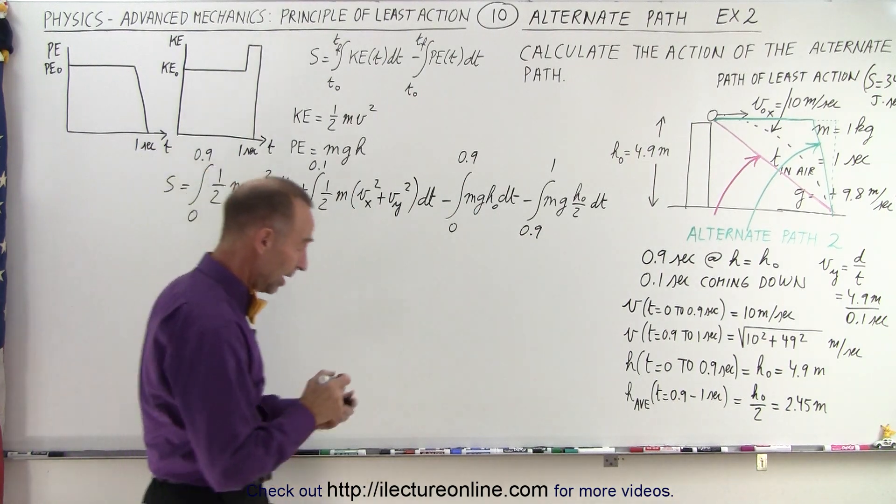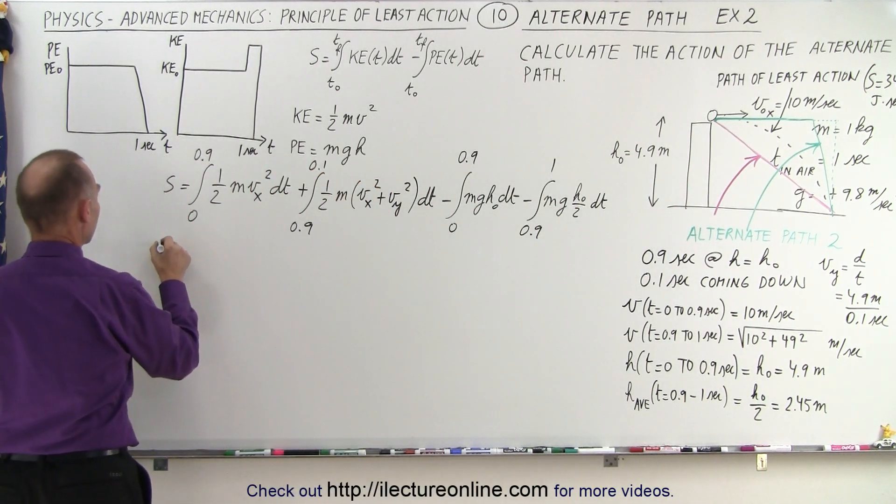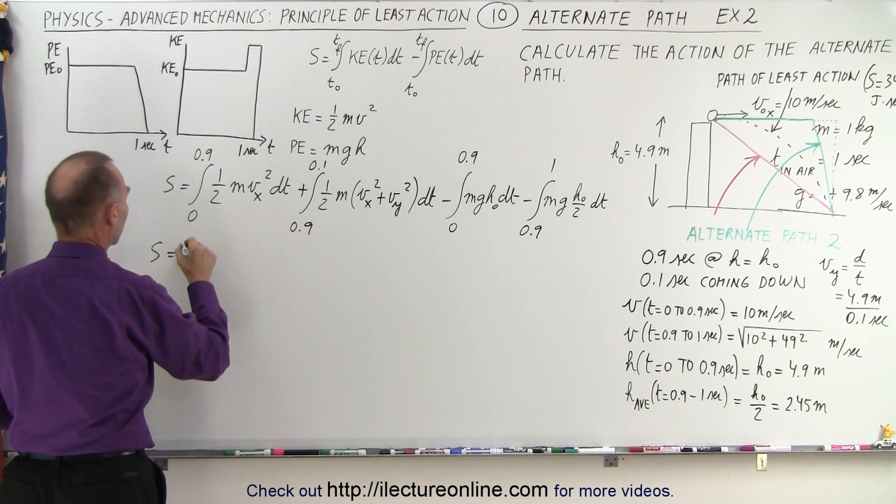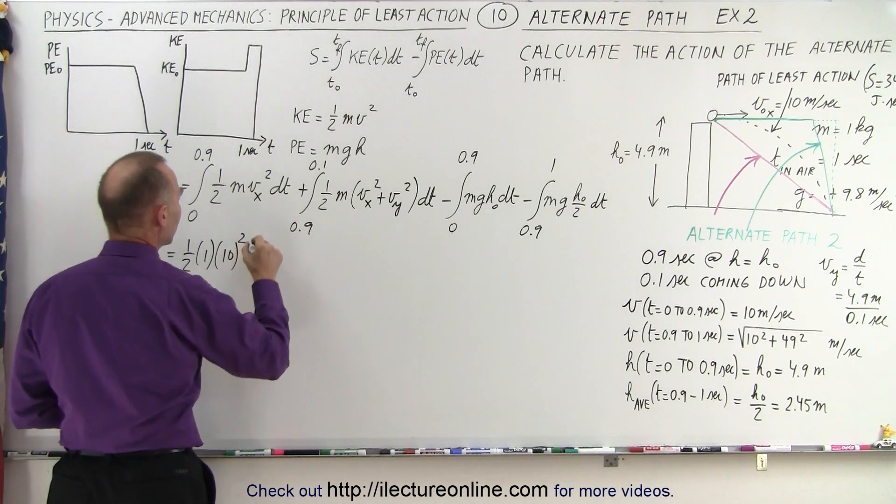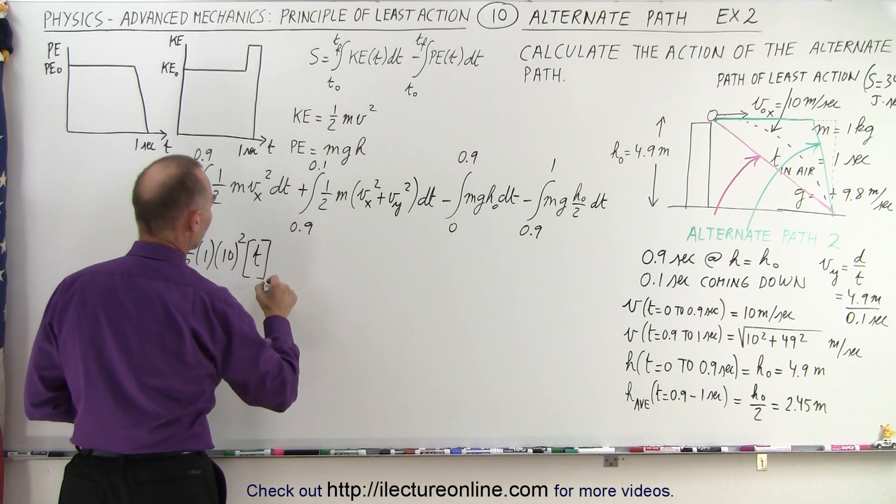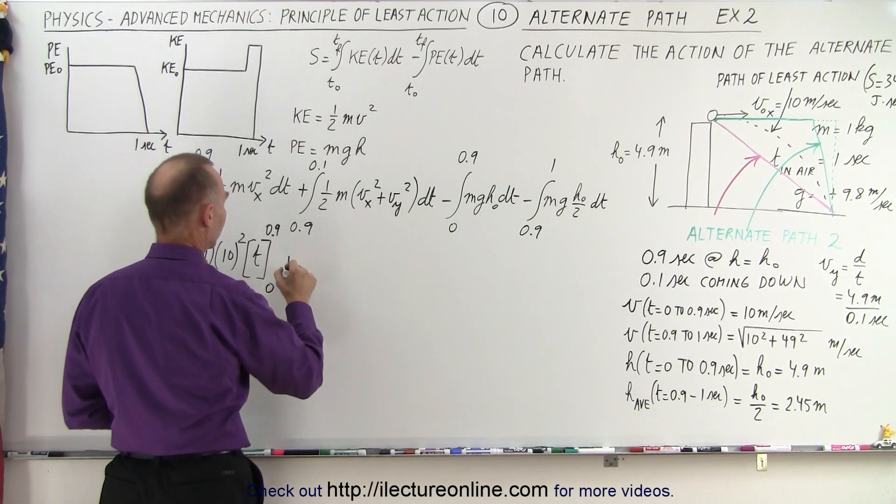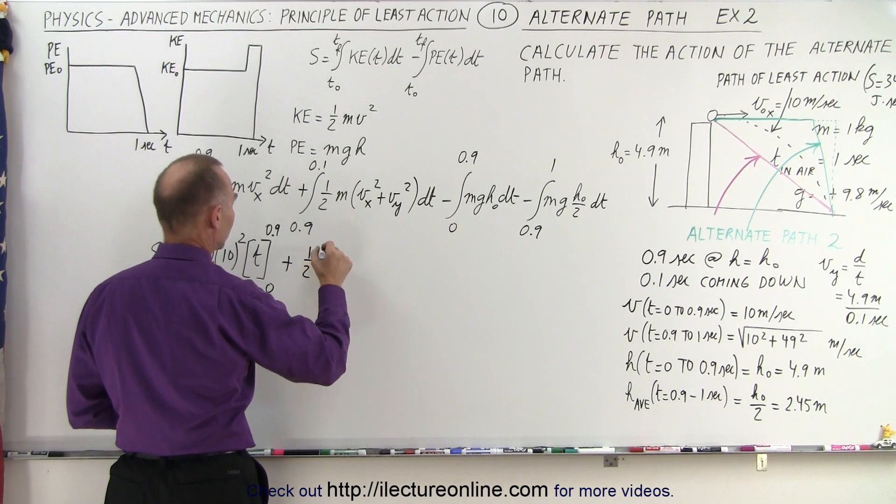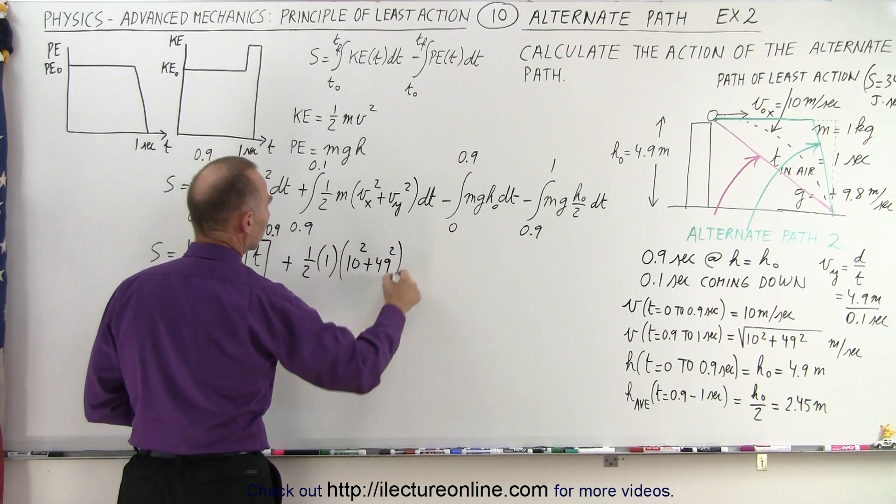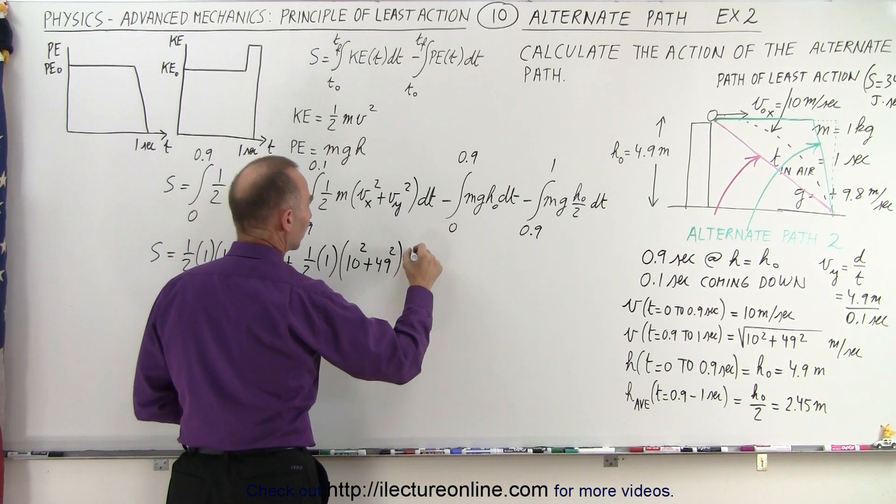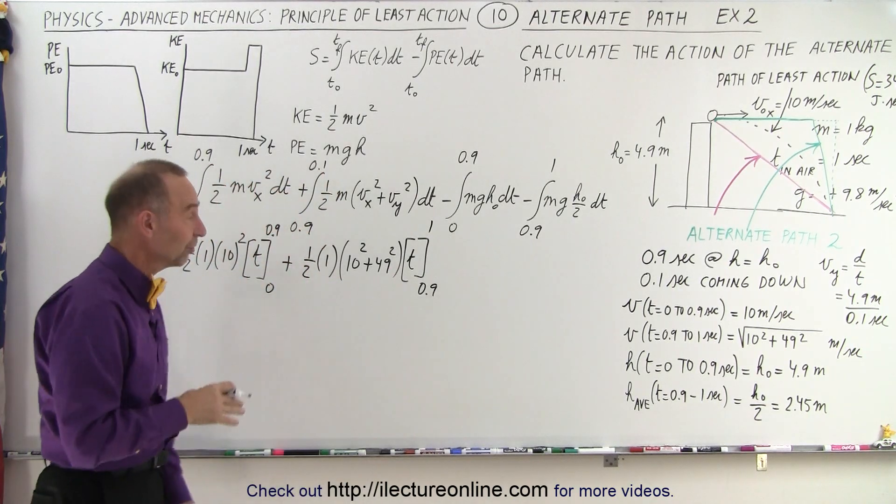Let's see what we end up with, and let's see if the number is smaller than 34 joules times seconds. All right, let's say we get s equals, all these are constants, so we get one half times the mass times the velocity in the x direction squared times dt integrated, which will be t from 0 to 0.9. Okay, and then we have plus one half times the mass, which is 1 times 10 squared plus 49 squared, and that would be times t evaluated from 0.9 to 1, so that the difference of that will be 0.1.